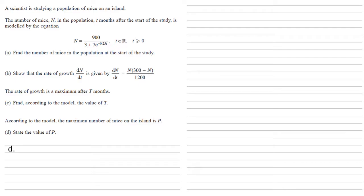Finally, according to the model, the maximum number of mice on the island is p — state the value of p. Looking at our original formula, n is the population. For n to be as large as possible, we need the denominator to be as small as possible. That happens when e to the minus 0.25t is as close to 0 as possible. Setting this to 0, we get p equals 900 over 3 plus 0, which is 300.